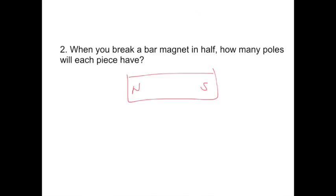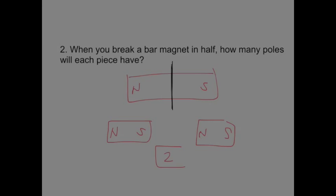So essentially what they're asking is if you break this magnet in half, you have these two pieces, how many poles will each section have? It might be intuitive to say that this end will only have a north pole and this end will only have a south pole. But as I explained earlier, no matter how much you cut a magnet in half, it will retain both of its poles. So each piece will have two poles, a north and a south.